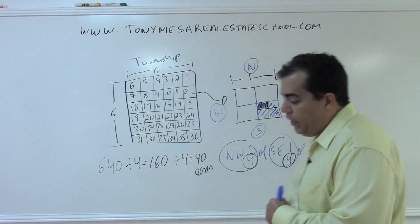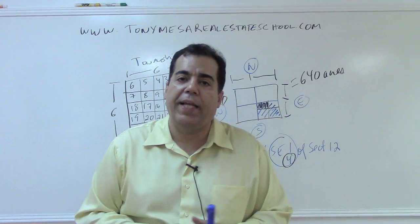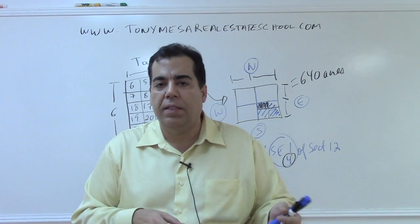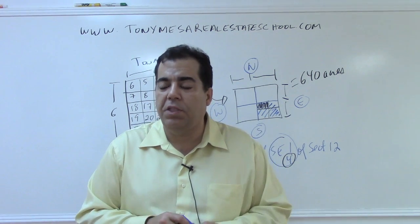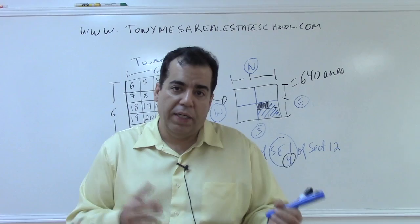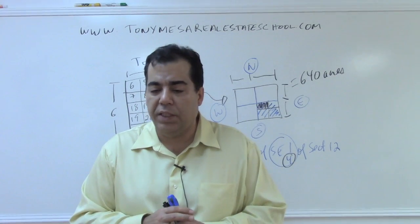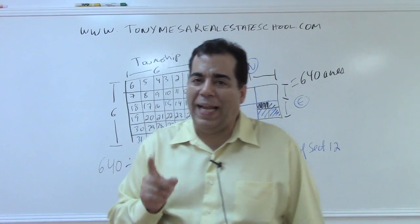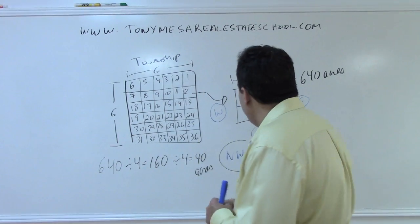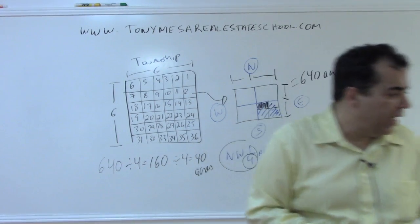So the idea is since each section has 640 acres, you could just divide by the denominator, the number on the bottom of each fraction. And that will tell you what size that parcel is in terms of acreage. You have to watch out for the word 'and.' And, in this method of legal description, means a separate parcel of land.